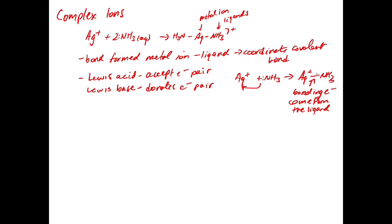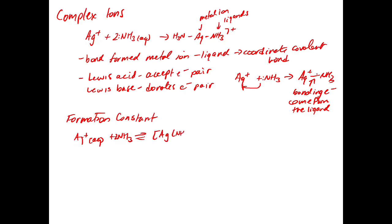That's what a complex ion is. There are two constants we can define related to the equilibrium. The formation constant KF is where we take the silver ion plus ammonia, which forms an equilibrium with the complex ion — written as [Ag(NH3)2]+. The equilibrium expression is KF = [Ag(NH3)2+] divided by [Ag+] times [NH3] squared. That's the formation constant.